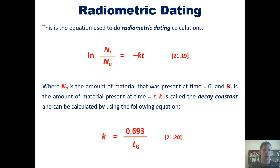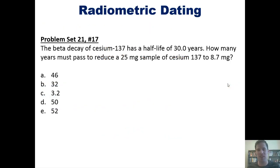First, the beta decay of cesium-137 has a half-life of 30 years. How many years must pass to reduce a 25 milligram sample of cesium-137 to 8.7 milligrams? I'm not going to do this for you here, but if you wish, you can click the link here to a separate video in which I'll show you how to do it on the board.